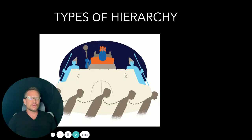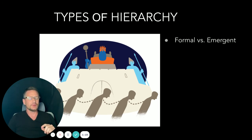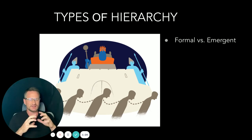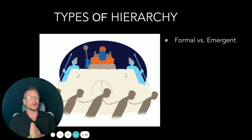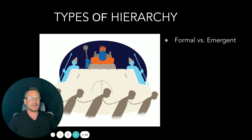We want to make sure we talk about the different types of hierarchy, because they're not always so clear cut. For example, there are emergent hierarchies, which form based on considerations beyond the scope of this conversation. We want to focus on formal hierarchies, where it is determined in advance who is to give the commands and who is to take them. That is a formalized structure.